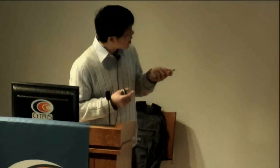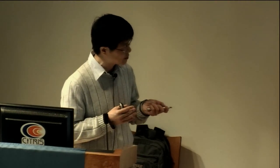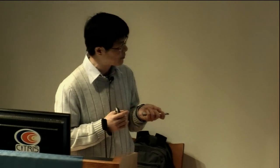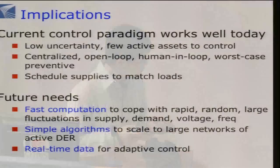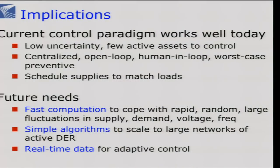If we have a large network of such active endpoints that fluctuate randomly, then we have to close the loop. We have to be able to do very fast computations to cope with these large, rapid, random fluctuations in supply, demand, voltage, frequency, and so on. We need simple algorithms to scale to such a large network of active endpoints and do real-time control. That's the challenge.